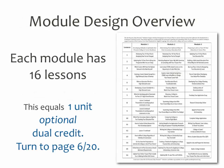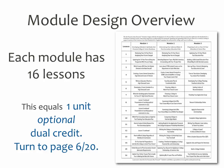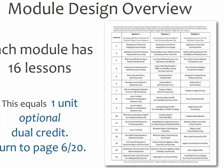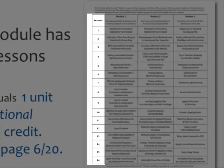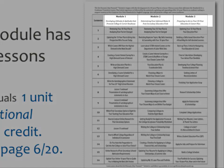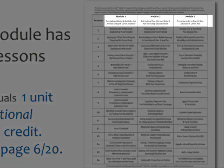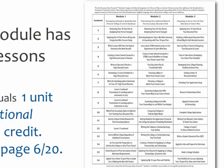Prior to jumping into Module 1, I want to make sure that everyone understands the scope and sequence of the modules. What you'll see here is the design of the modules — the 16 lessons, and then to the right Module 1, Module 2, and Module 3. Each module has 16 lessons and this equals one unit of optional dual enrollment credit.